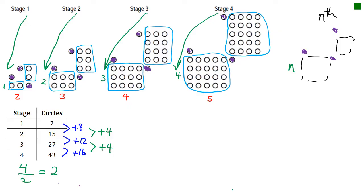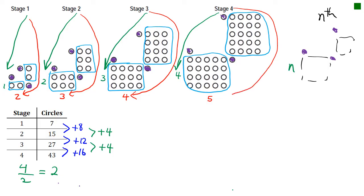Now looking along the bottom: stage 1 became 2, stage 2 became 3, stage 3 became 4, and stage 4 became 5. Each bottom is 1 more than the stage number, which means I need N plus 1. To get the area of this part of the shape, I need N times N plus 1. But we must remember that we have 2 of those — one at the bottom and one on its side — so each shape has 2 of these.